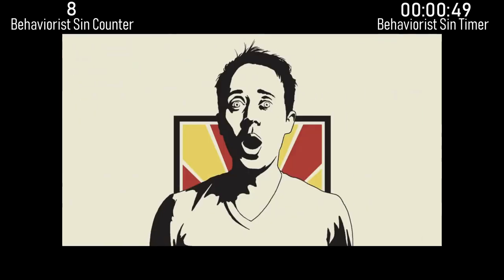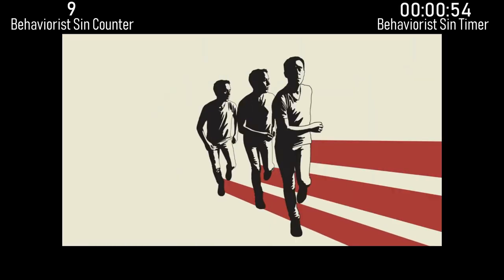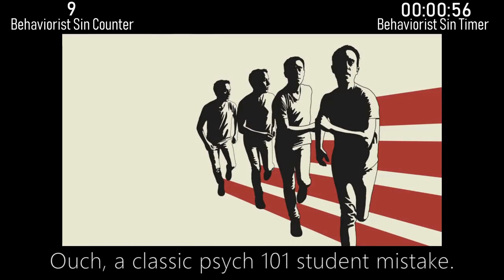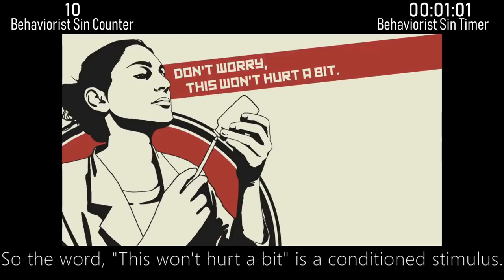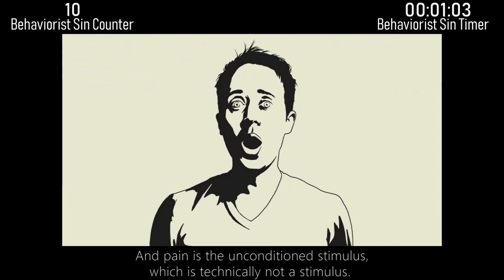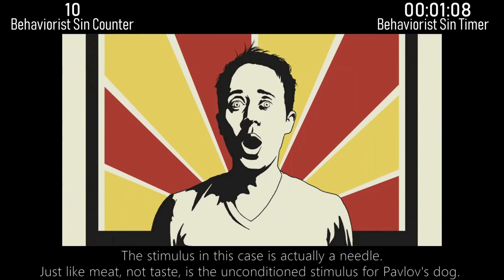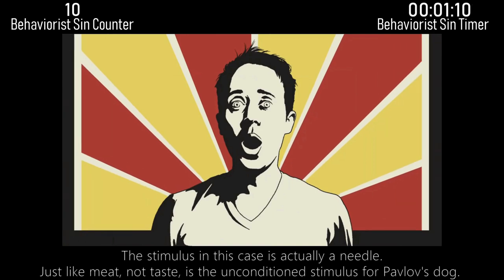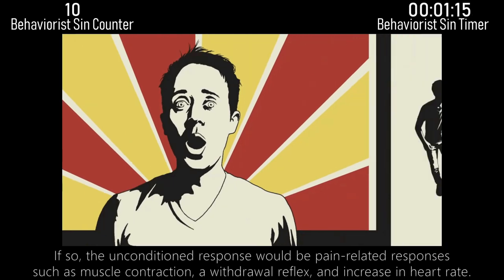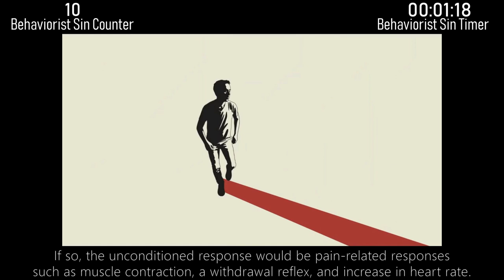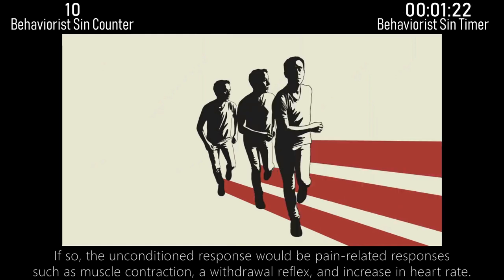When you went to get a shot, the words 'this won't hurt a bit' became a conditioned stimulus when they were paired with a painful stimulus, which was followed by your conditioned response of getting the heck out of there. A classic psych 101 student mistake: the words 'this won't hurt a bit' are called the conditioned stimulus, and the pain is called the unconditioned stimulus — which is technically not accurate. The stimulus in this case is actually the needle, just like meat, not the taste, is the unconditioned stimulus for Pavlov's dog.